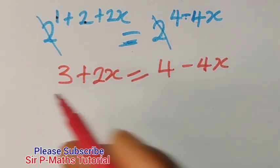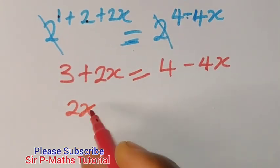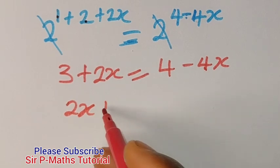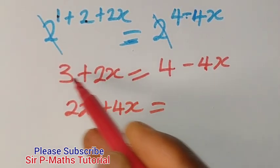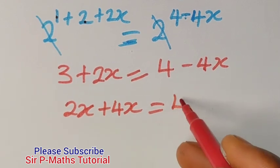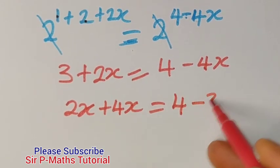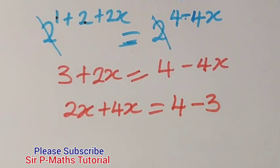4x will come over. So I will have 2x plus 4x equal to, this 3 will go over here. I will have 4 minus 3.